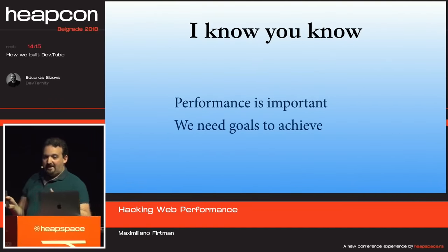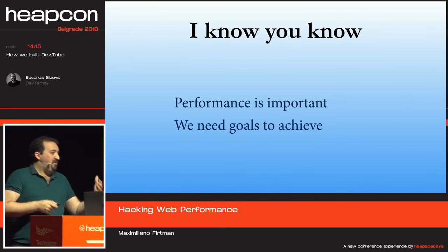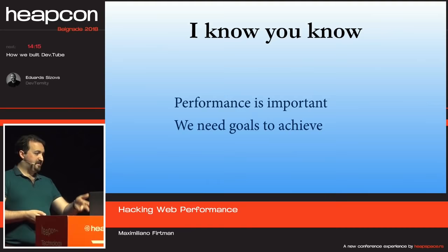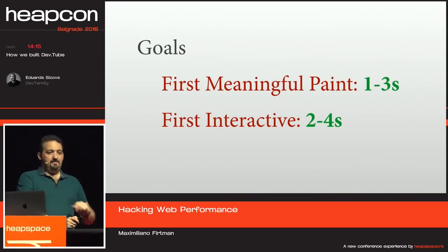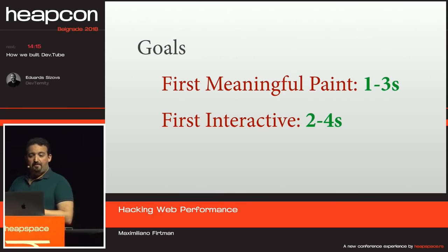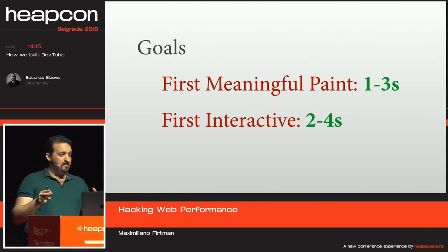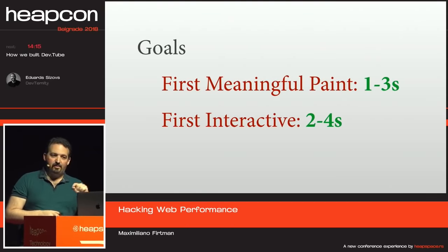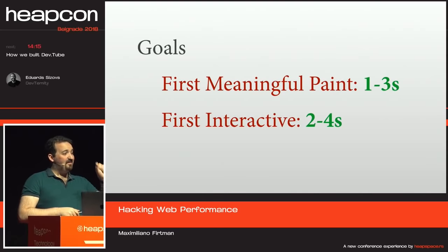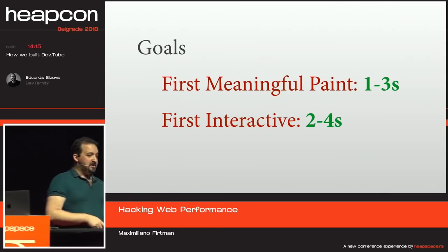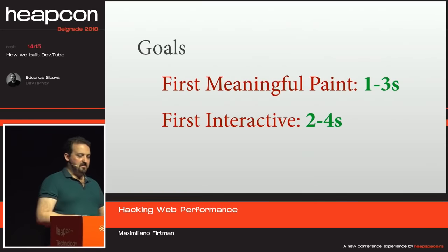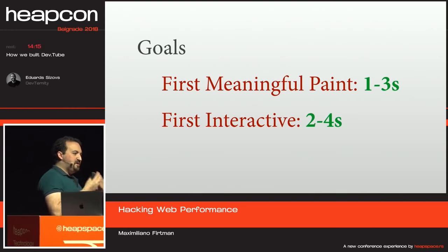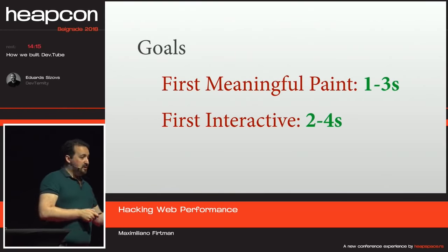Performance is important and we need goals, not just metrics — because how fast is fast? We need to set our goals. Currently the market goals are: first meaningful paint should be between one and three seconds. After a user types a URL or clicks a link, after a maximum of three seconds they should see something meaningful — not on your computer on Wi-Fi, but on any context, including a low-end device with a slow 3G connection. First interactive has about one more second: two to four seconds.